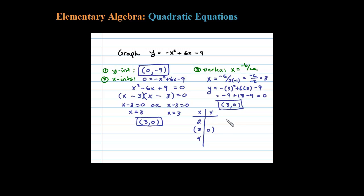When x is 2, I'll take that and substitute that in: negative 2 squared plus 6 times 2 minus the 9. So negative 4 plus 12 minus 9, well that adds up to negative 1. So 2 comma negative 1 is a point on the graph.